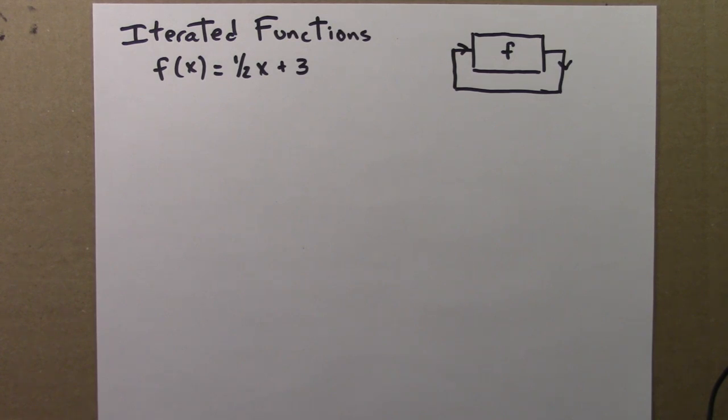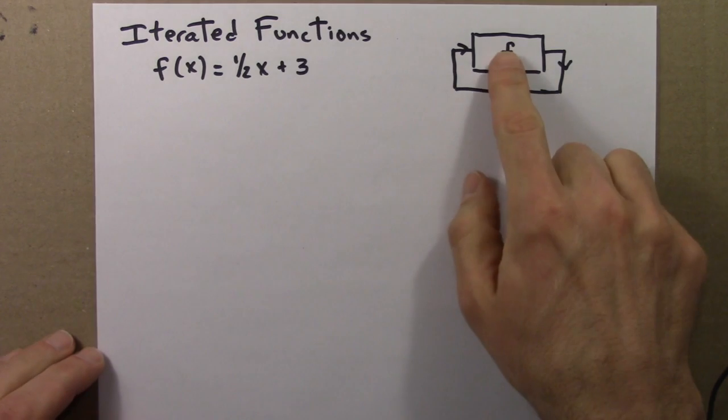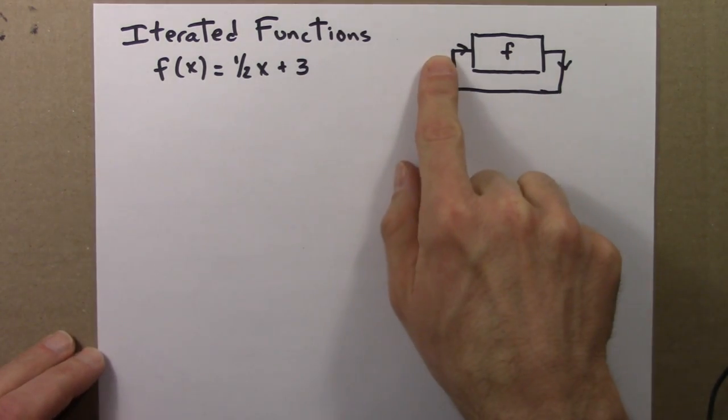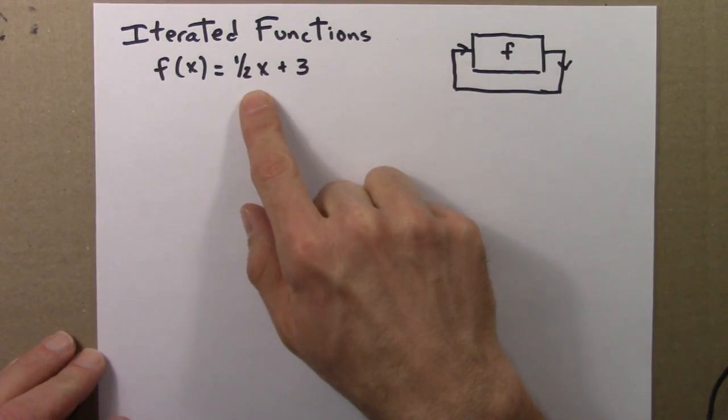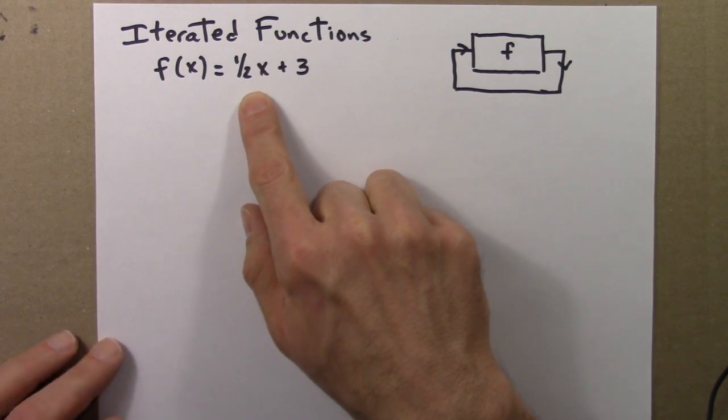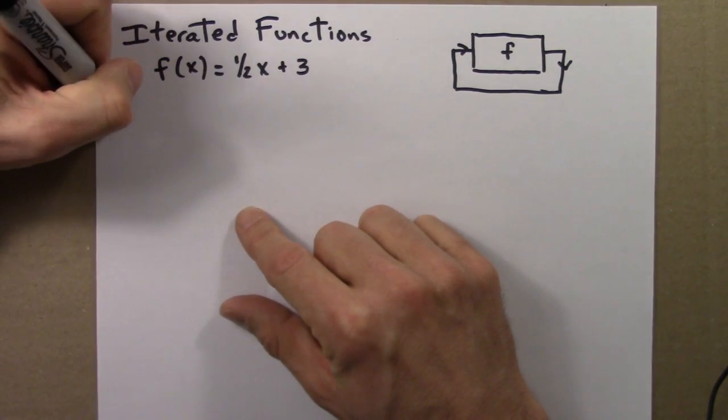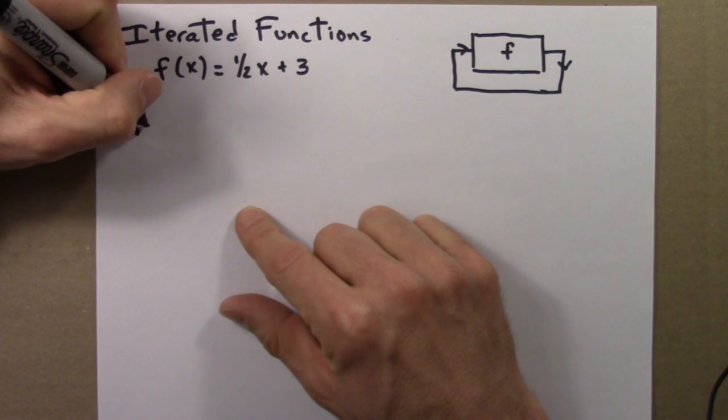An iterated function is a function that's turned into a feedback loop. For a concrete example, suppose the function is half x plus 3, and I choose a seed of 2.